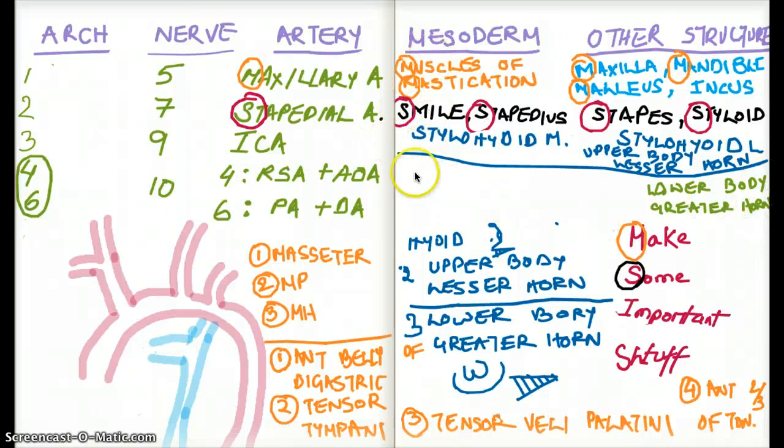So now we have the cartilage derivative of brachial arch 3. But what about muscle? What kind of muscle is going to be derived from brachial arch 3? And the muscle is going to be stylopharyngeus. Stylopharyngeus. Now, how do I remember stylopharyngeus? Well, brachial arch 3, what nerve innervates brachial arch 3?